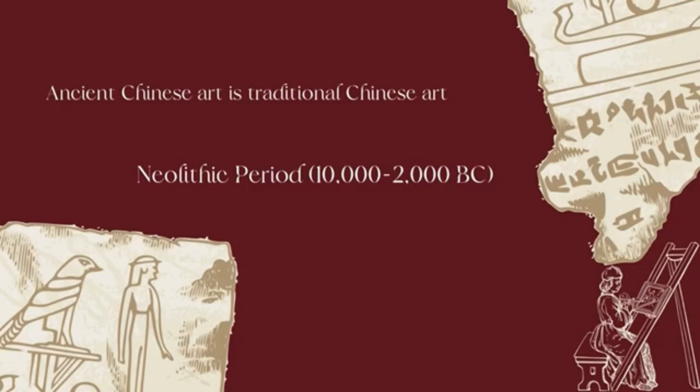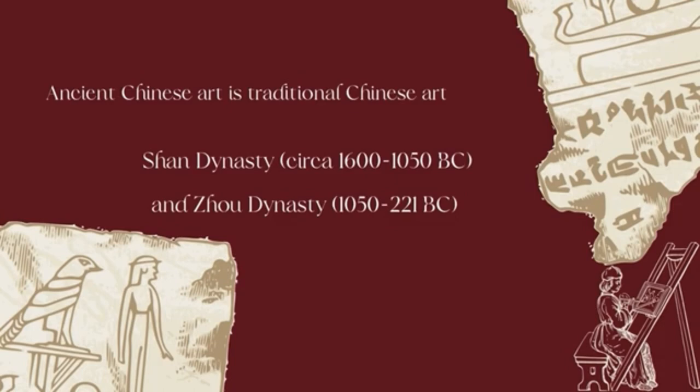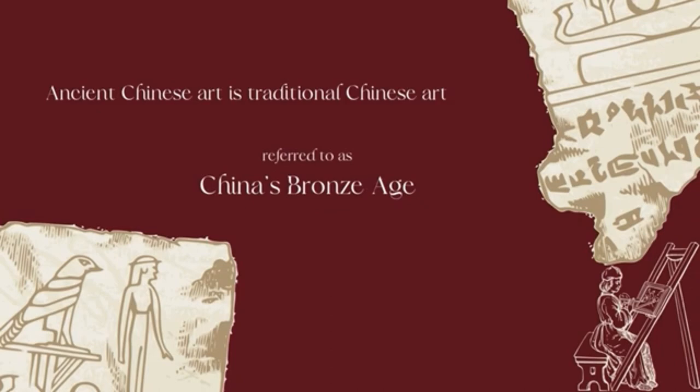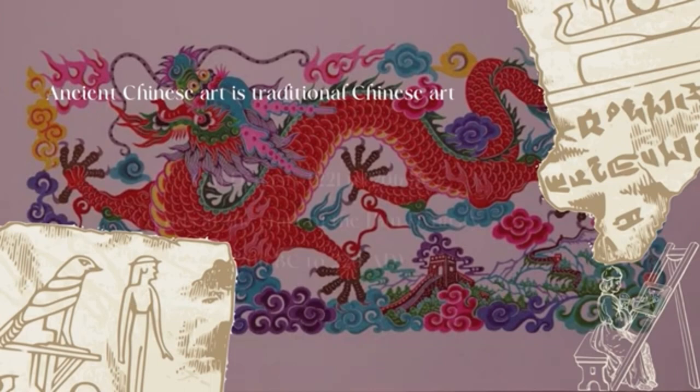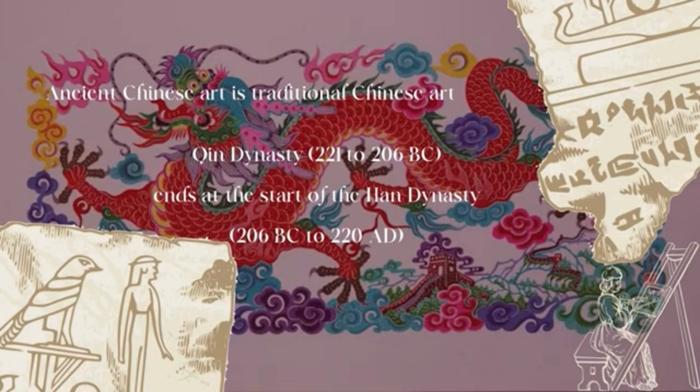Ancient Chinese art is traditional Chinese art made beginning in the Neolithic period, which is 10,000 to 2,000 BC, continuing through the Shang dynasty (circa 1600–1050 BC) and Zhou dynasty (1050–221 BC), which are often referred to as China's Bronze Age. For Chinese art, the definition of ancient generally goes through the Qin dynasty (221 to 206 BC) and ends at the start of the Han dynasty (206 BC to 220 AD).